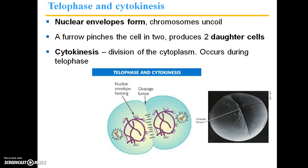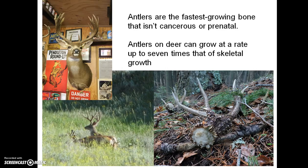During telophase, the nuclear envelopes reform around the duplicated genetic material, and the chromosomes uncoil. A furrow pinches the cell in two and produces two daughter cells — this point is called the cleavage furrow. Then cytokinesis occurs, which is a division of the cytoplasm. All of that fluid and other organelles within the cell divides, and this basically occurs along with telophase, but it's not technically part of mitosis.